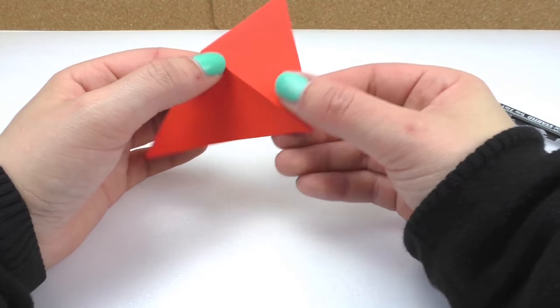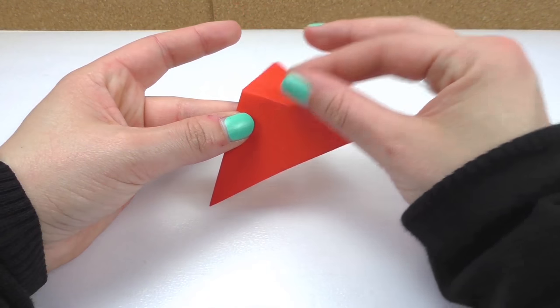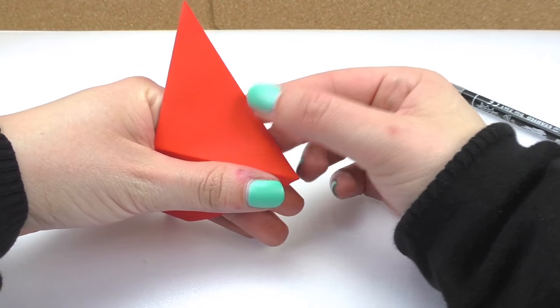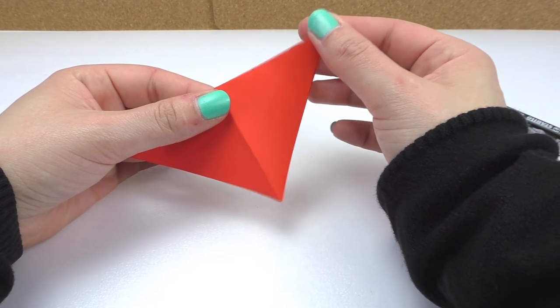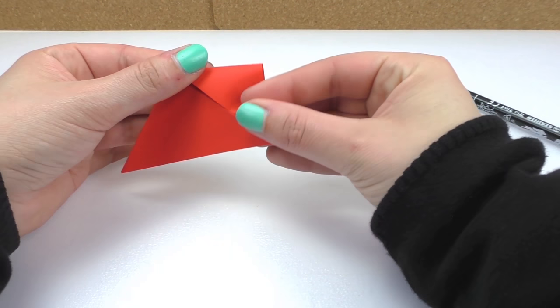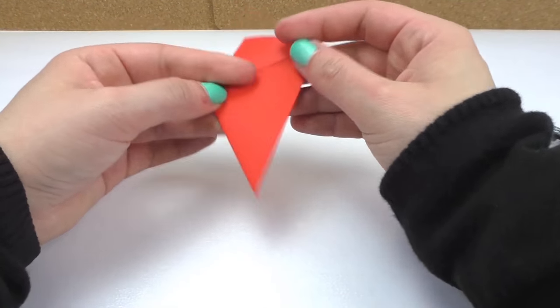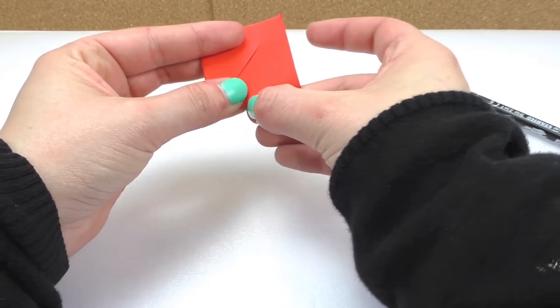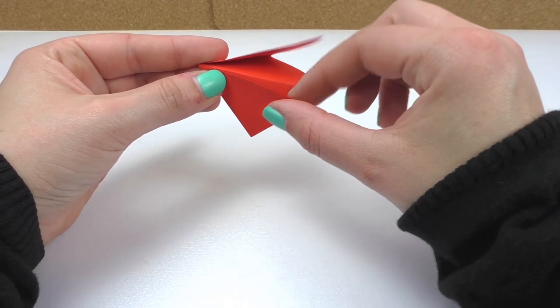Now we're going to open it and this is how it looks. We have a fold in the middle and then we have two triangles. Here is our first one on the right side. And we're going to fold it like this. Make sure to press really hard and we're going to do the same thing on the other side. Now these are the wings of our ladybug.